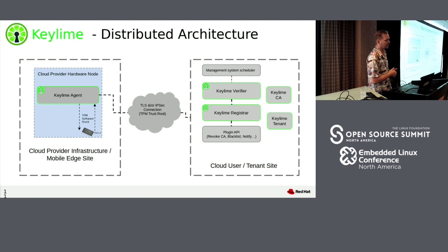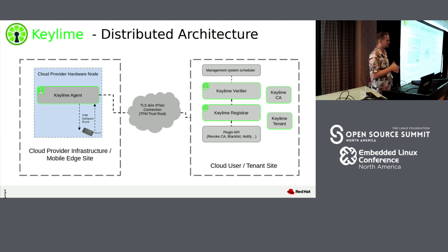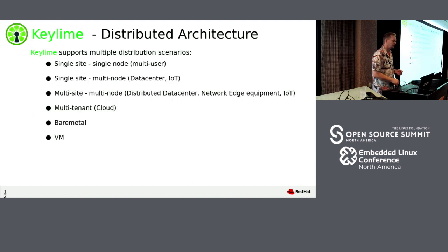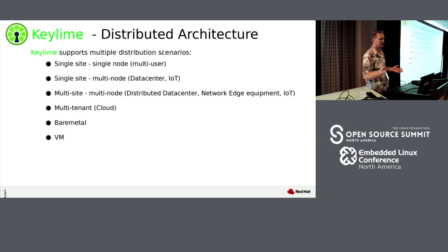A quick overview of the high-level architecture: there is a KeyLime agent that lives on each cloud node, and that agent communicates back to tenant management systems to do the verification and registration of each node in the overall cloud system. Those tenant systems can be in the cloud — either a dedicated cloud resource or off-site at the tenant's home base — and it communicates over secure channels. It can secure anything from a single multi-user system all the way up through a multi-tenant distributed cloud system with multiple data centers around the world.